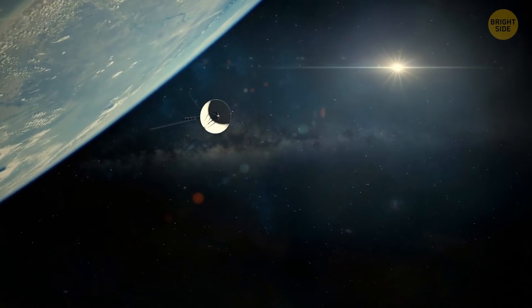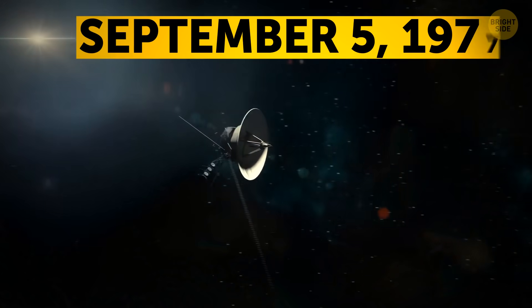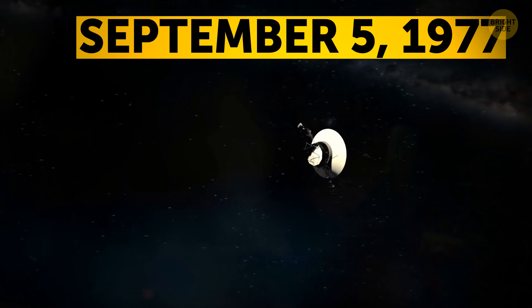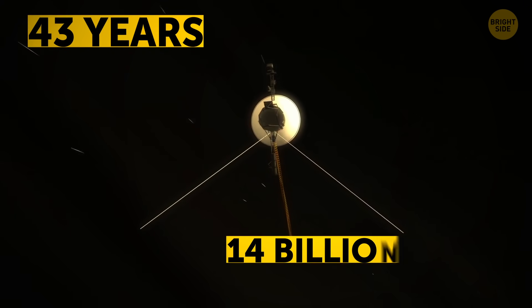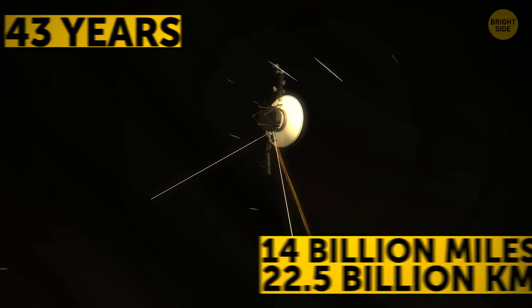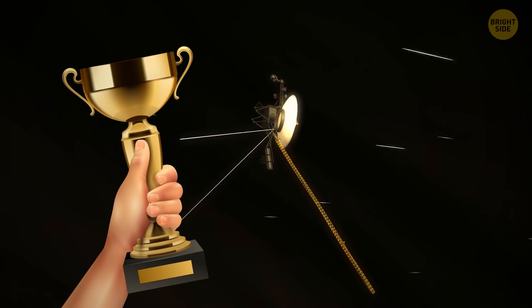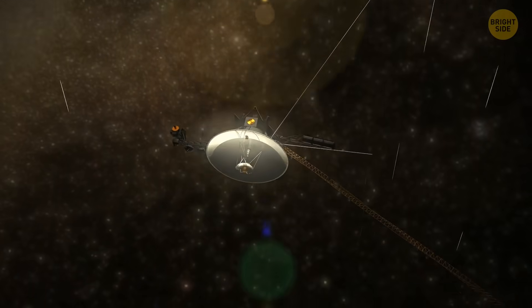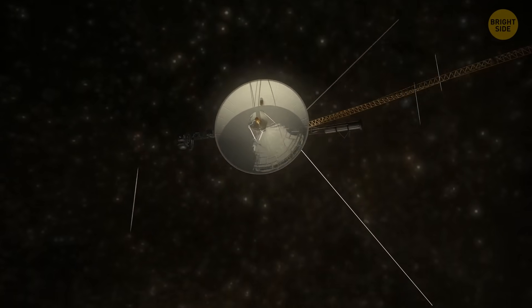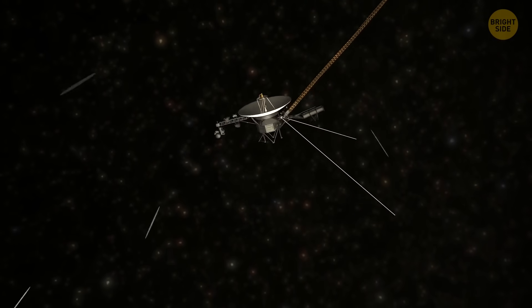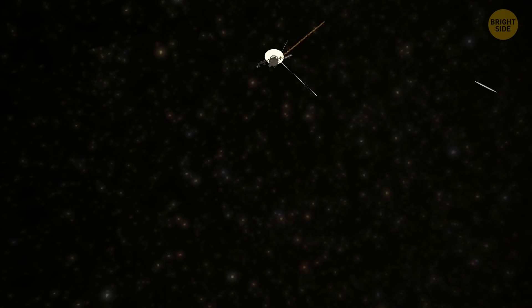For comparison, the Voyager 1 mission was launched on September 5, 1977. In 43 years, it's traveled about 14 billion miles and is the most remote human-made object. It's also the loneliest one in the universe. It has long since left the boundaries of our solar system and is moving further into outer space.